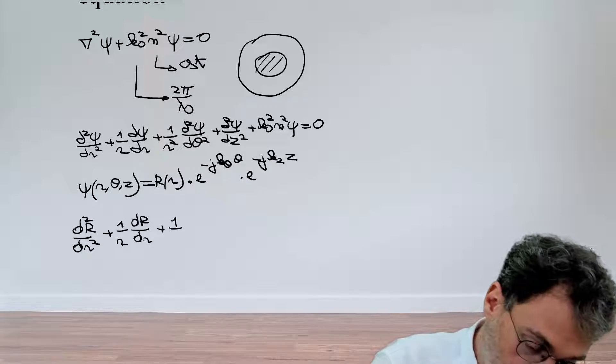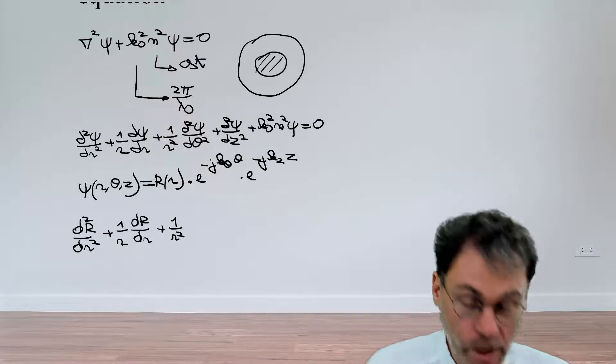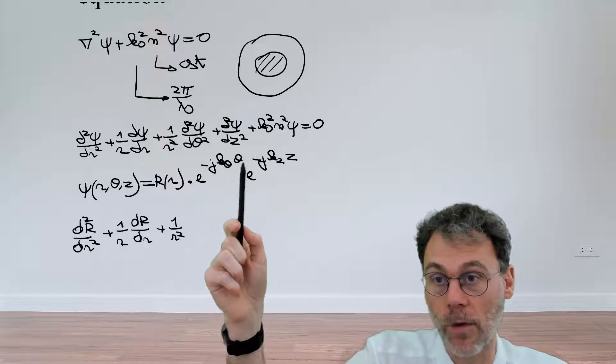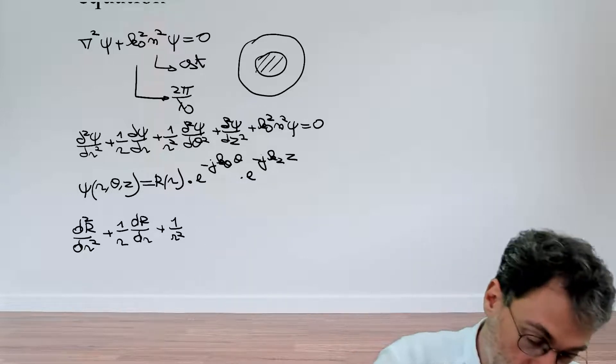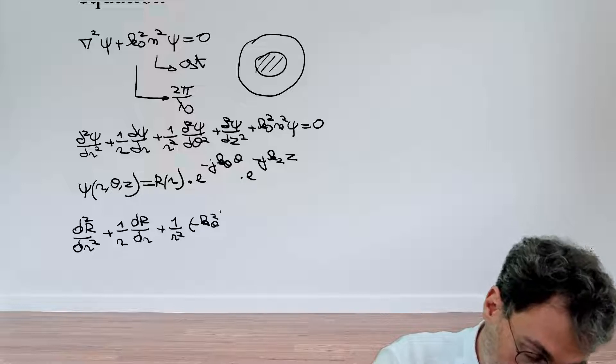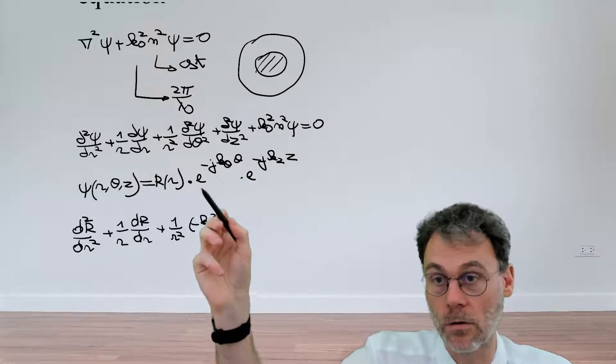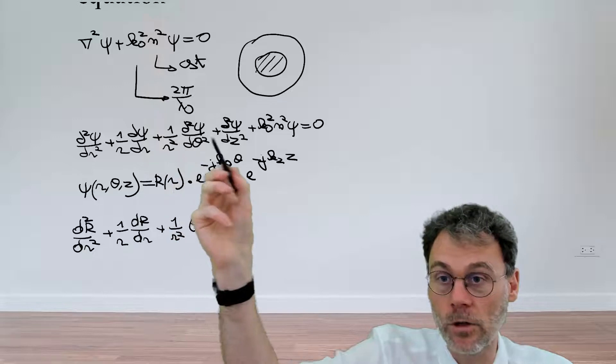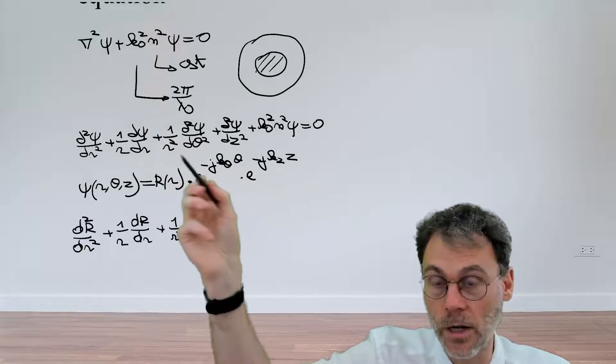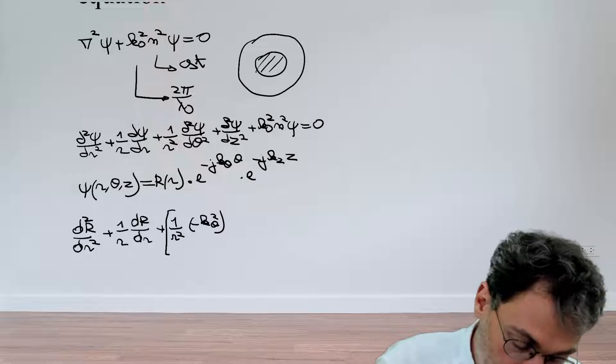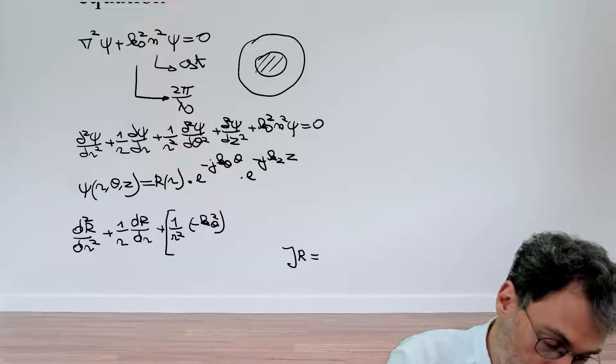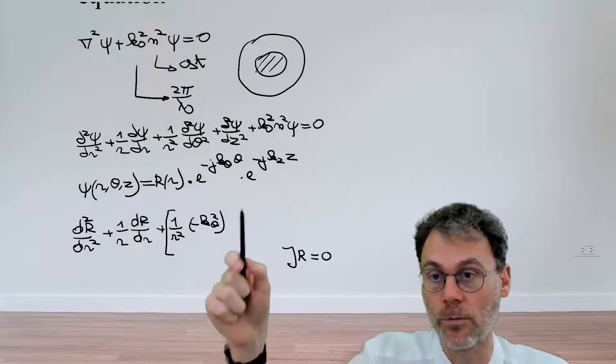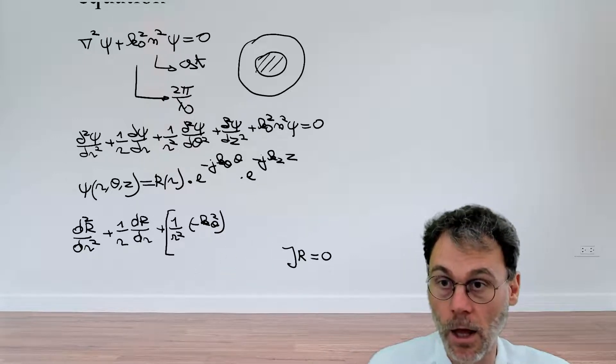And then we have 1 over r². And then we have the second derivative with respect to θ. If we take the derivative with respect to θ once, we pick up minus j kθ. So if we do that twice, we pick up minus kθ². And then, let's not forget we need to multiply by r and we divide away the exponentials. Now, in all of the other terms, there will always be a factor r. So let's make some space for the other terms and multiply by r only at the very end here.